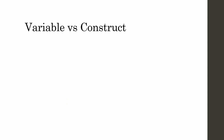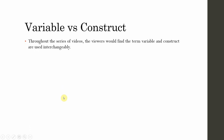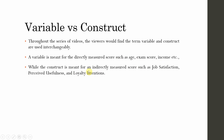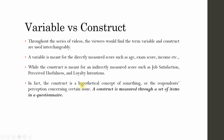What is the difference between a variable and a construct? Throughout this series of videos, the terms variable and construct will be used interchangeably. A variable is a directly measured score such as age, exam score, income, or height. A construct is measured indirectly through different observed items — for example, five items for job satisfaction. Job satisfaction is a construct measured indirectly through those items. The construct is a hypothetical concept, or the respondent's perception concerning a certain issue. You measure that perception using individual items, and the construct is measured through a set of items in a questionnaire.